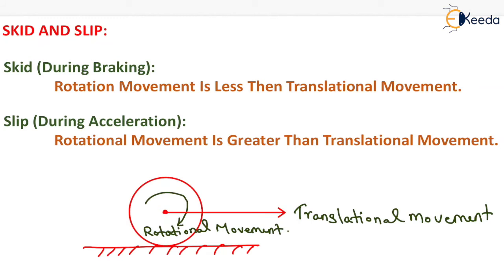The next topic is skid and slip. Skid occurs when the rotational movement of a wheel is less than the translational movement of that wheel. It generally takes place during braking operation: when we apply the brake, the rotational motion of the wheel stops but the translational movement of the vehicle continues for some distance — so skid takes place during braking operation.